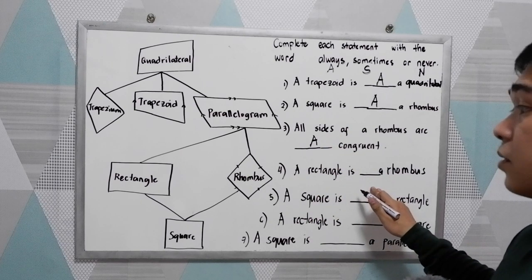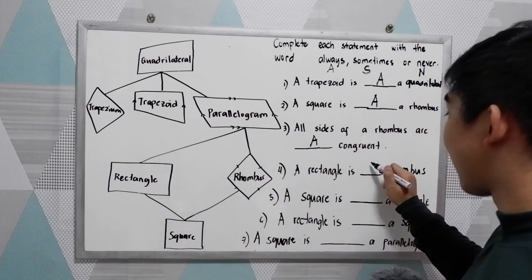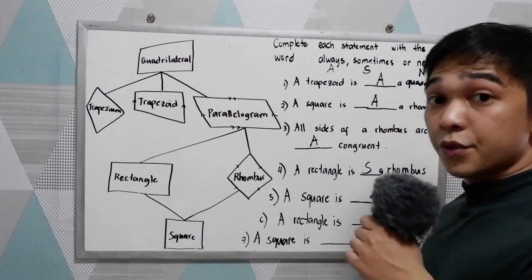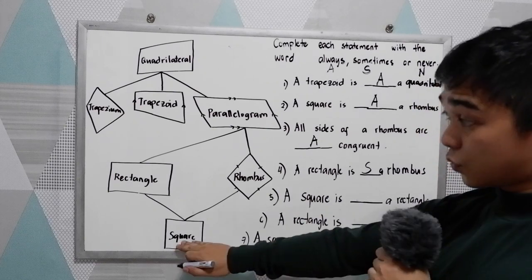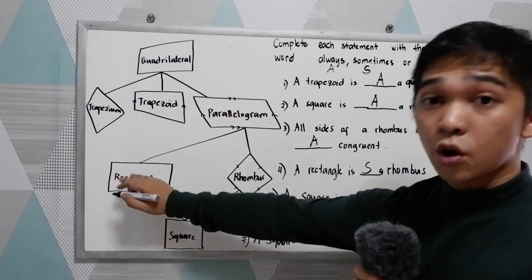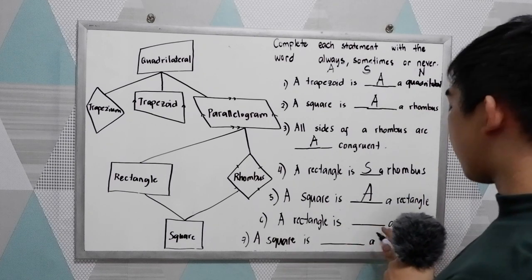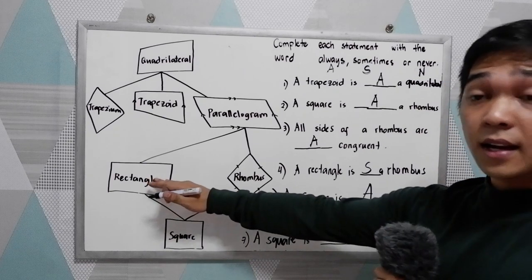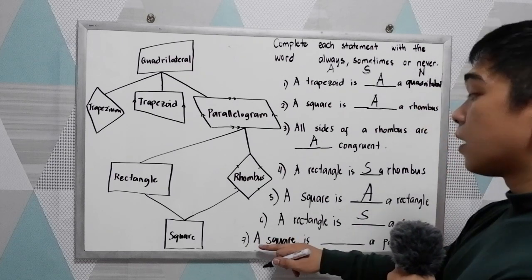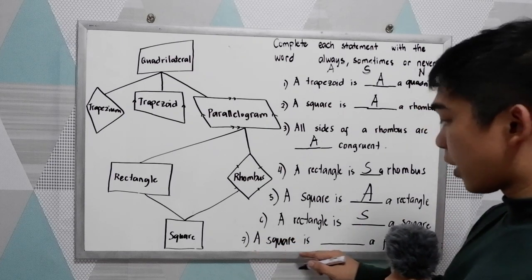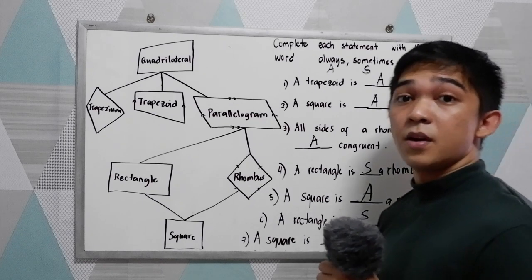A rectangle is sometimes a rhombus. A square is always a rectangle. A rectangle is sometimes a square. Last, a square is always a parallelogram.